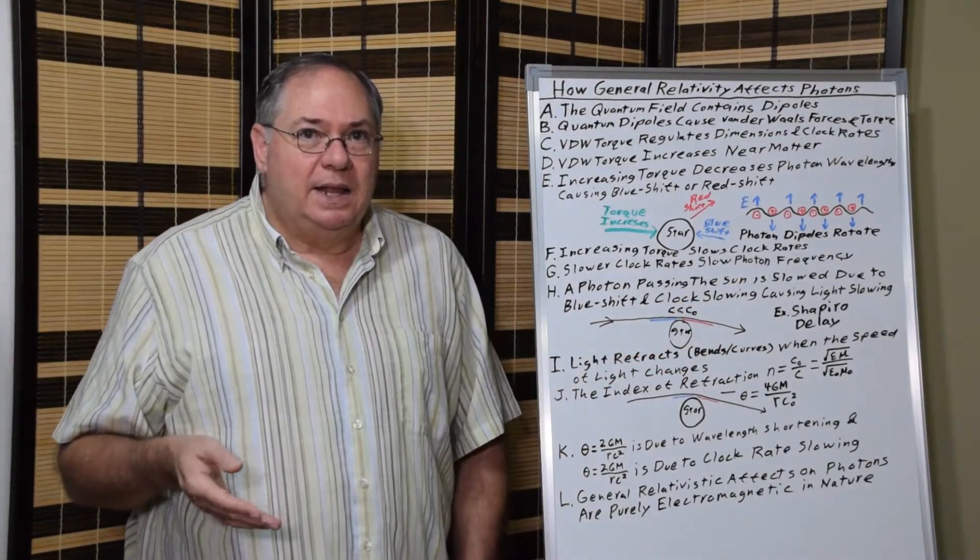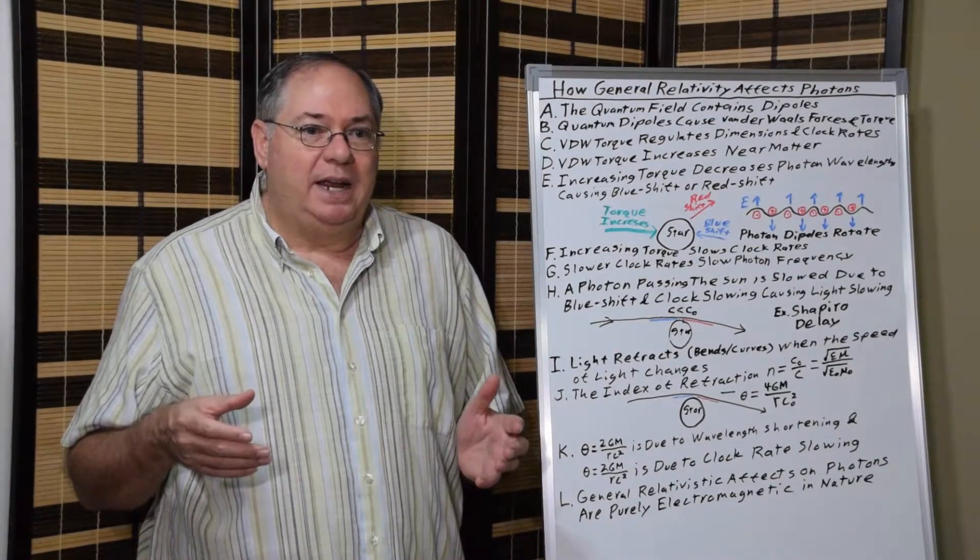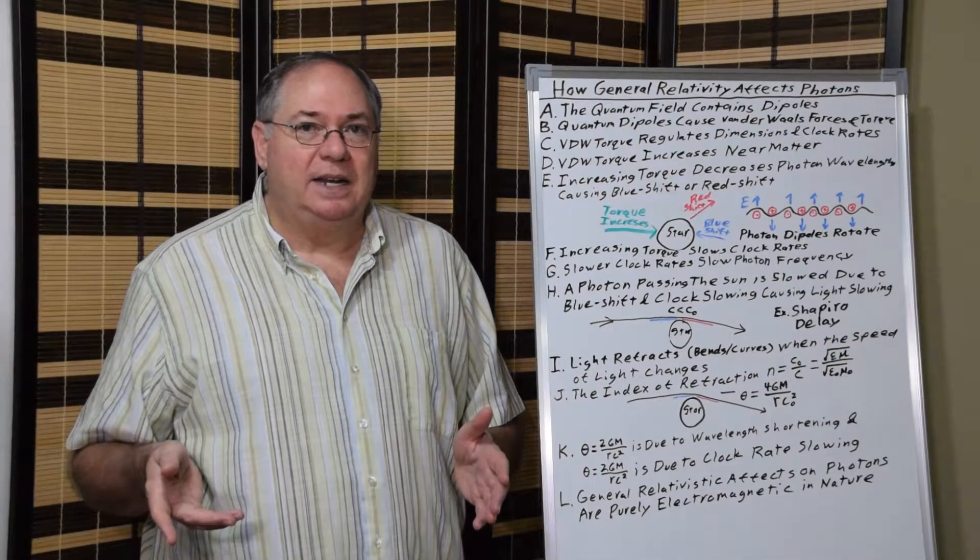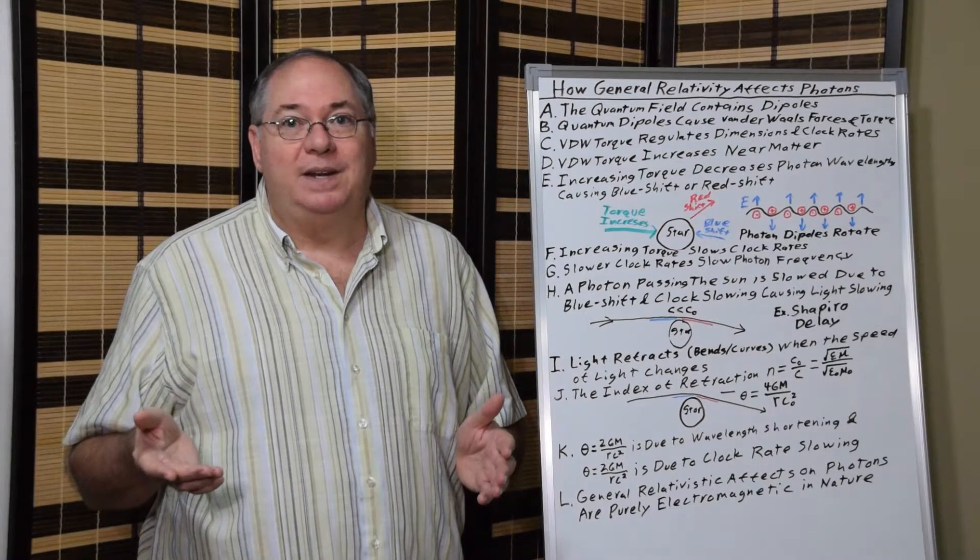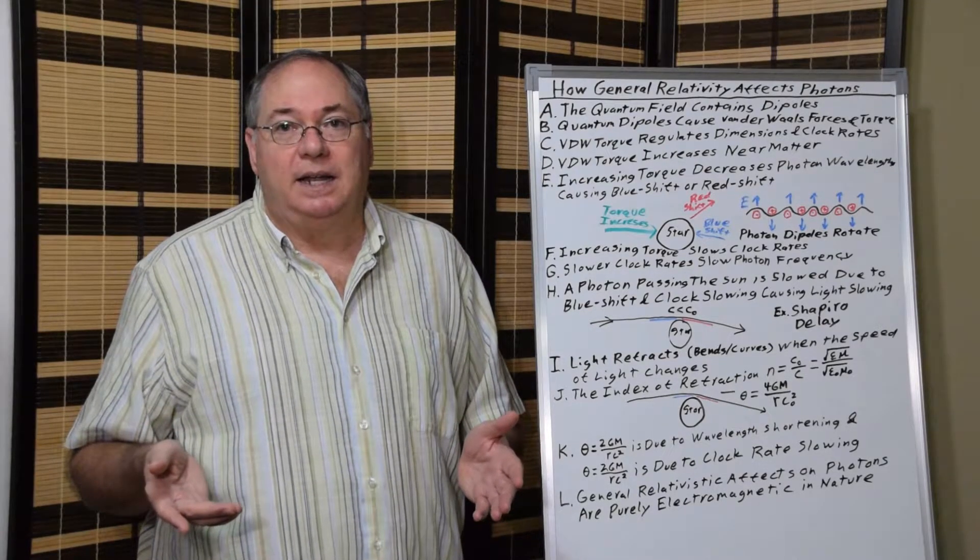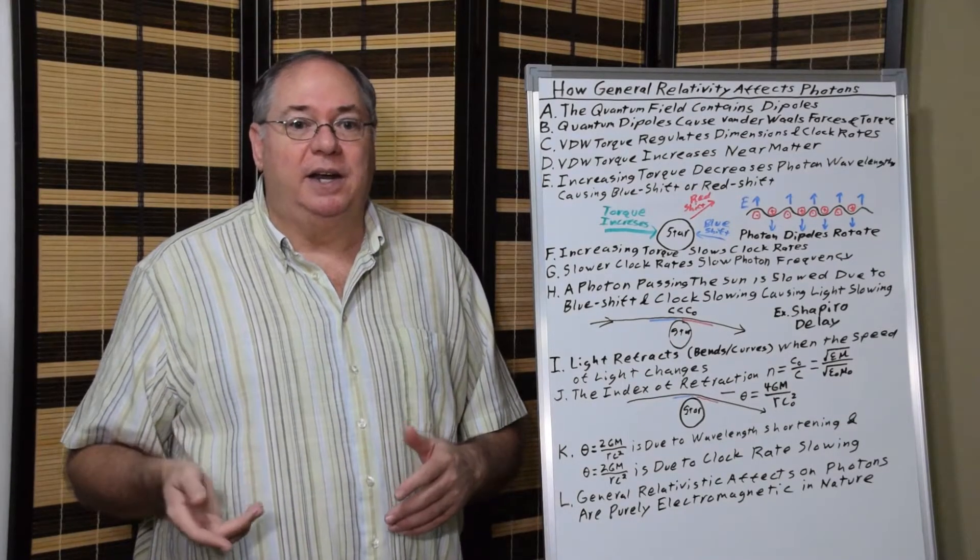Assuming the characteristics are the same on either side, you end up with the same velocity, frequency, and wavelength at the end. So the light slowing is all basic optics. Once again, it's a purely electrical interaction that has nothing to do with gravity itself per se. It's just an effect of the increasing van der Waals torque near a body of matter.